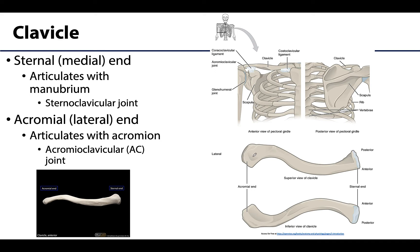The clavicle is a beautiful S-shaped bone that you can palpate almost its entire length. It is anteriorly placed right at the root of the neck region. The sternal end articulates with the manubrium, the superior most portion of the sternum, at the sternoclavicular joint. The lateral end articulates with the scapula, specifically the acromion portion, at the acromioclavicular joint — the AC joint — which you can feel as a bump when you follow your clavicle from medial to lateral.